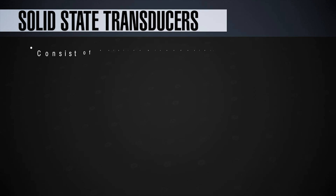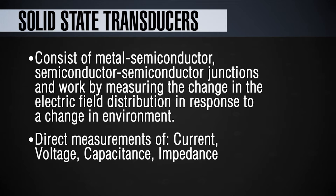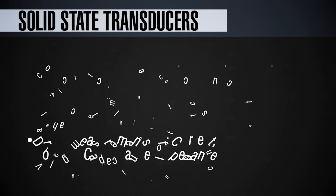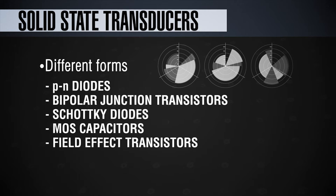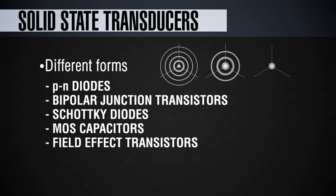Solid-state transducers consist of a metal-semiconductor junction or semiconductor-semiconductor junction. When these transducers are exposed to a change in ambient, like a change in a gas or vapor, the current-voltage curve of the metal-semiconductor or semiconductor-semiconductor junction changes. You can easily measure the change in current, voltage, capacitance, or even impedance. Different forms of solid-state transducers include a simple PN diode, a bipolar transistor, a Schottky diode, a metal oxide semiconductor MOS capacitor, or a field-effect transistor.